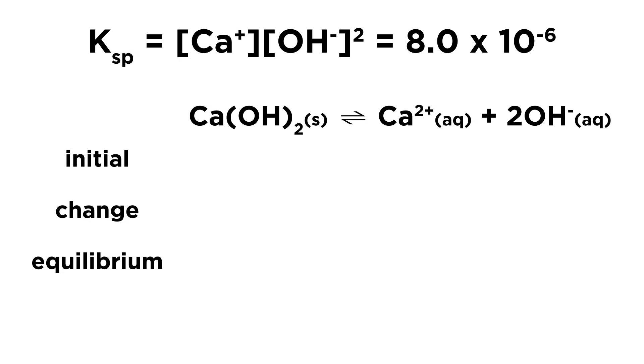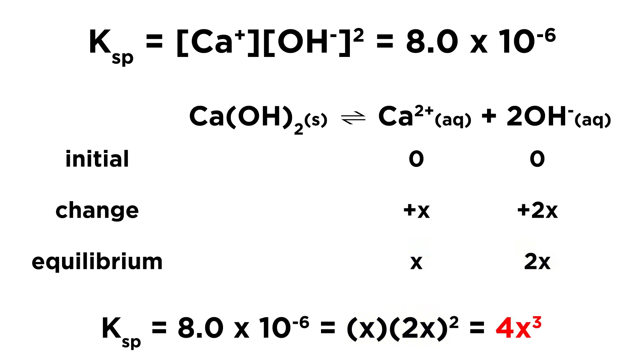Then when we make the ICE chart, we will notice that again the initial concentration of each ion will be zero, but the change will be X and 2X respectively due to the stoichiometry of the equation, and the equilibrium concentrations will also be X and 2X. Putting these into the Ksp expression, we get that the Ksp will be equal to 4X cubed.